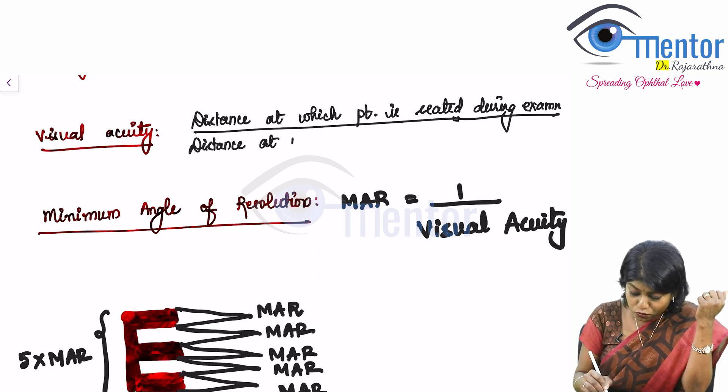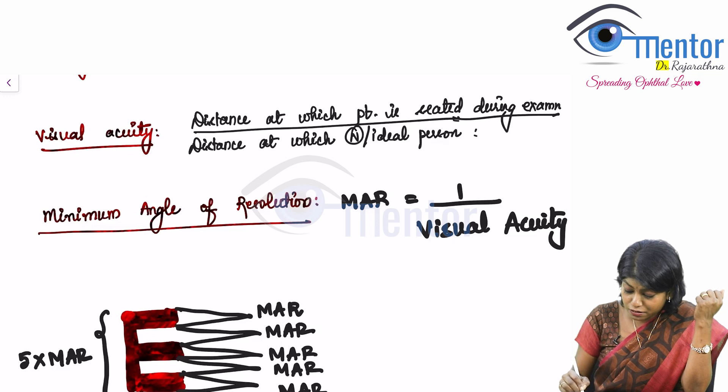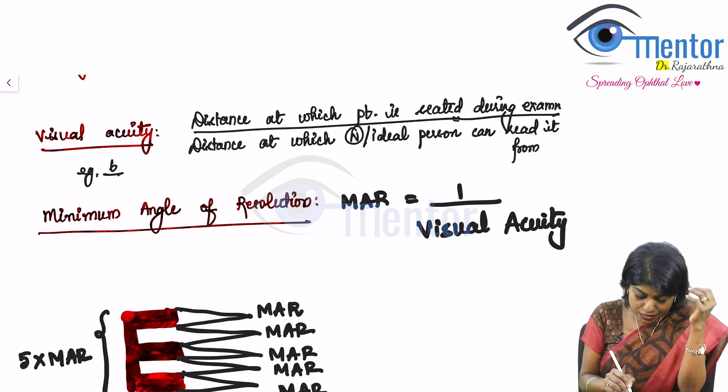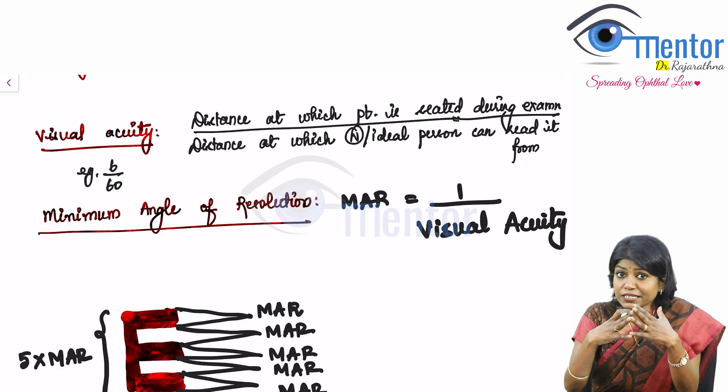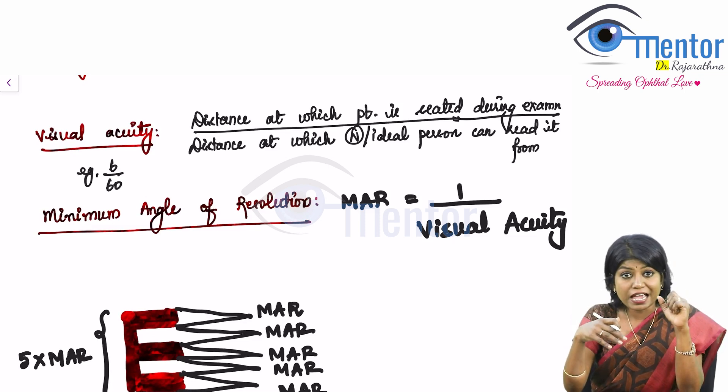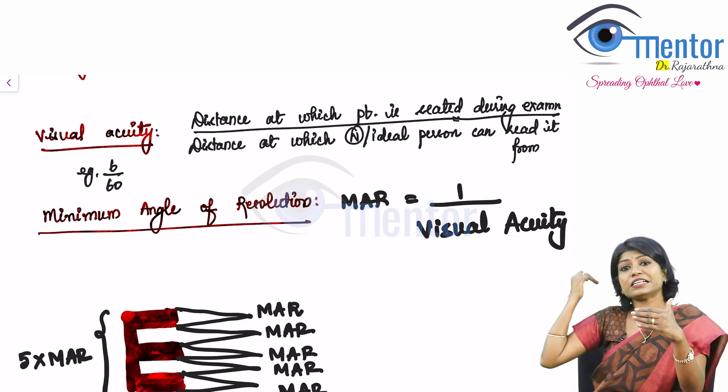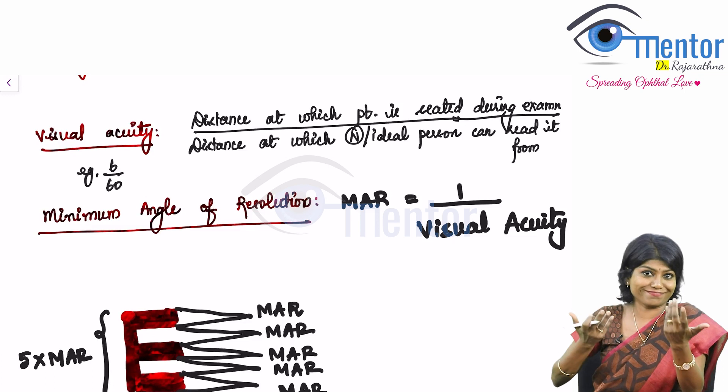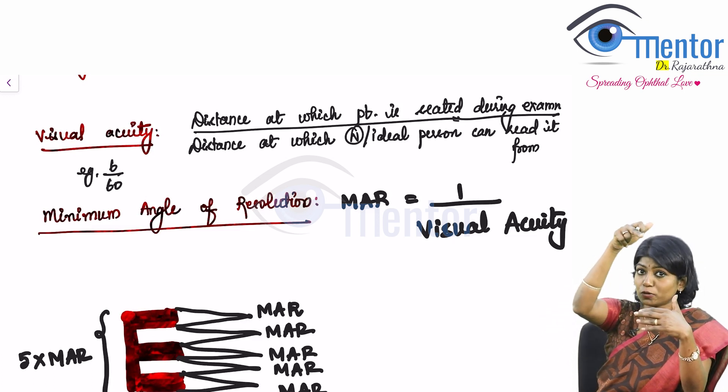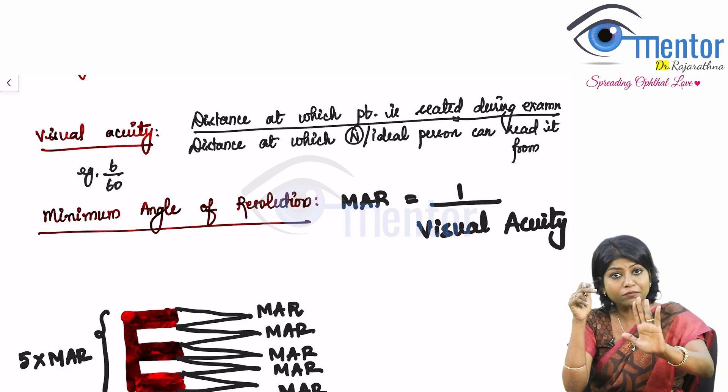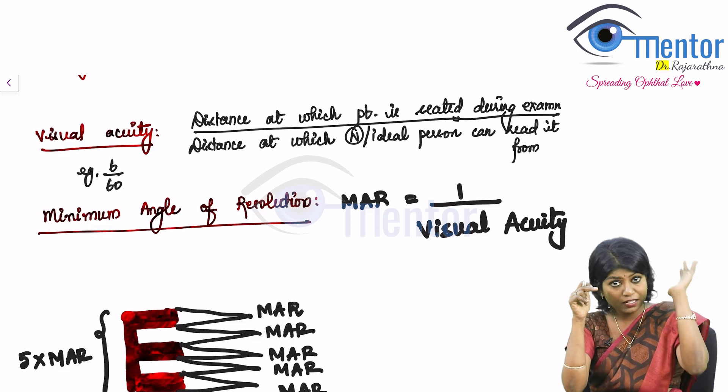What is the denominator? The distance at which a normal or ideal person can read it from. So what is the distance at which a normal person can read? Even when he is standing at 60 meters denominator. So even if I suppose I am normal, even if I stand at 60 meters, I can read that particular optotype. Whereas the patient in question is standing at 6 meters and reading that particular line. So when I say his visual acuity is that much, that is his maximum. So he is reading only that line. He is not able to read anything below that.